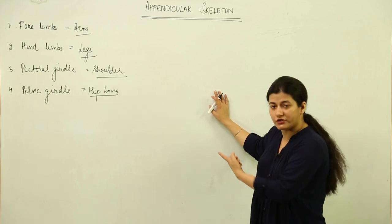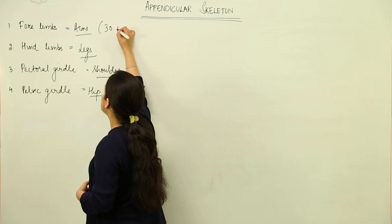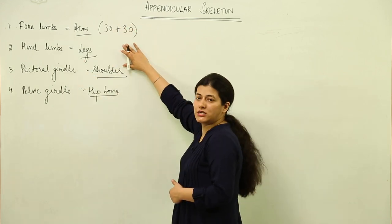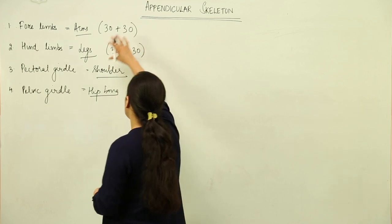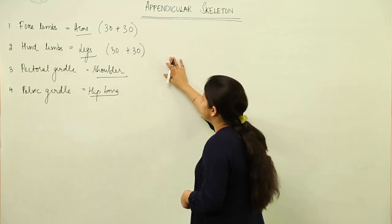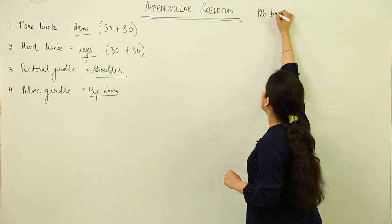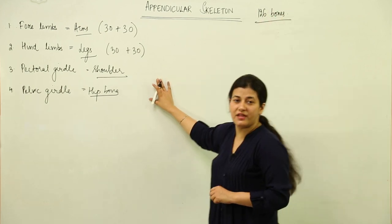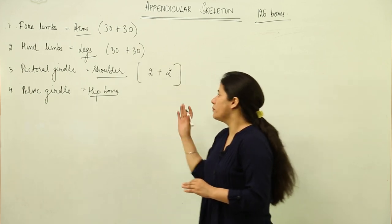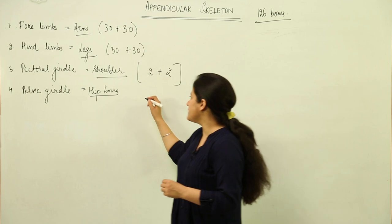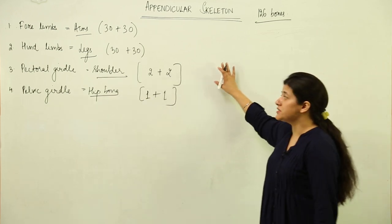We'll look at how many bones are present in each division and their roles. In the case of forelimbs, each arm has 30 bones, giving 60 total. Similarly, hind limbs have 30 bones in each leg, giving another 60. That accounts for 120 bones, leaving 6 bones for the girdles. The appendicular skeleton has 126 bones total. The pectoral girdle has two bones on each side, and the pelvic girdle has one bone in each half.